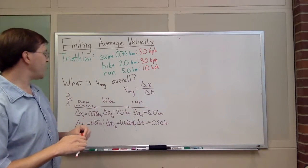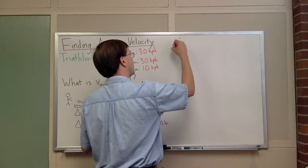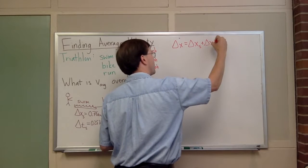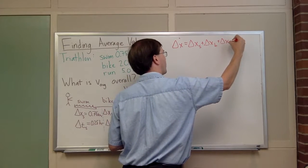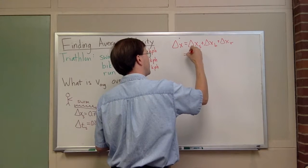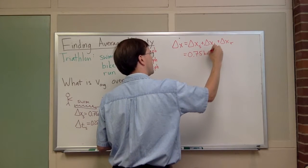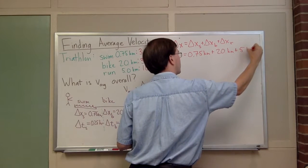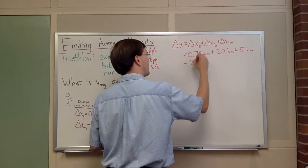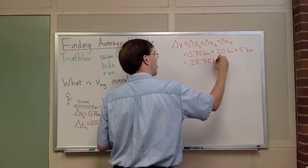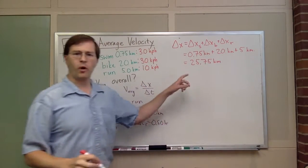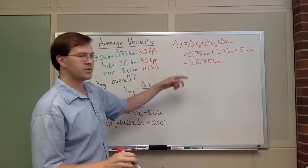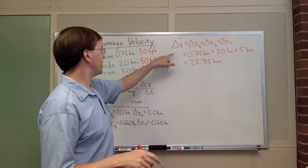To put it together, my delta x total is going to be the sum of delta x for the swim plus delta x for the bike plus delta x for the run. That's going to be 0.75 kilometers plus 20 kilometers plus 5 kilometers. So I'll get 25.75 kilometers.